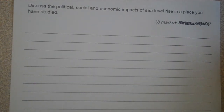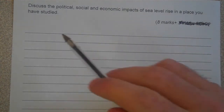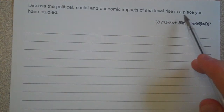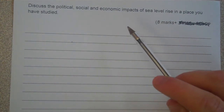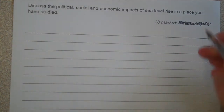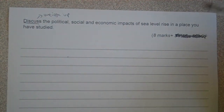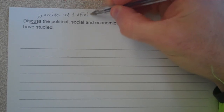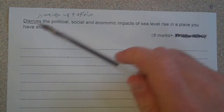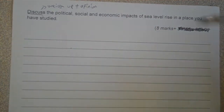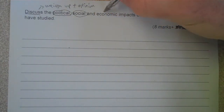Hello, so this is an 8-marker from the Coast section of the GCSE course. Discuss the political, social and economic impacts of sea level rise in a place you have studied. Just to analyse the question first, we've got to discuss — so this means we've got to do some weighing up and come to a bit of an opinion on the question. The other key things in here: political, social and economic.